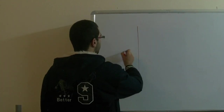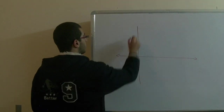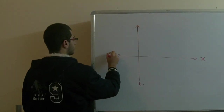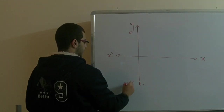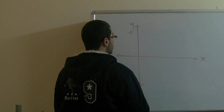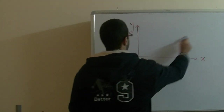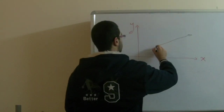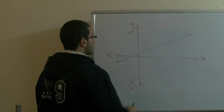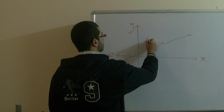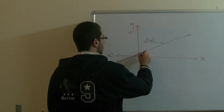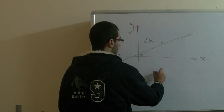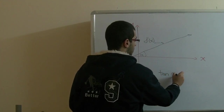So if we draw the y and x coordinates like this, and we have a certain function which has this line going this way — this function is called f(x). It makes a certain angle, which is the slope of this function. So tan(alpha) equals the slope.